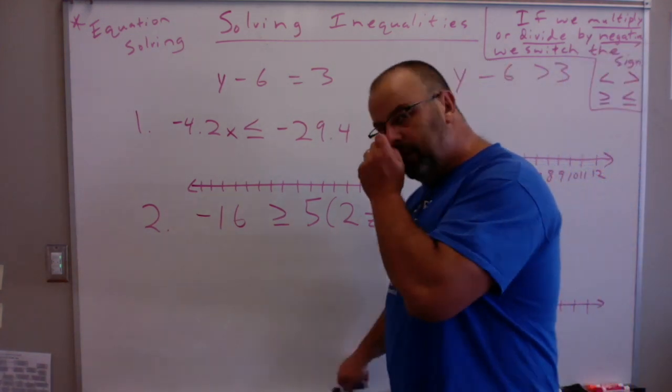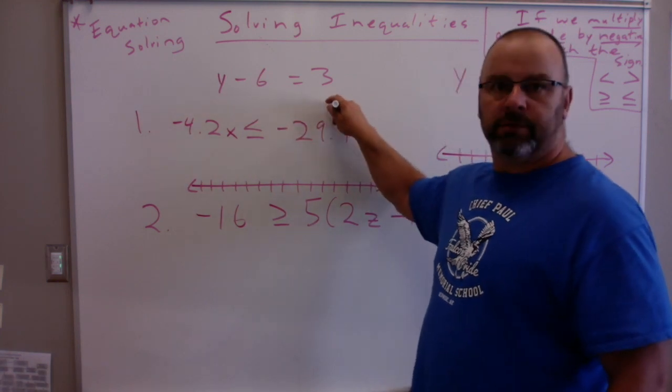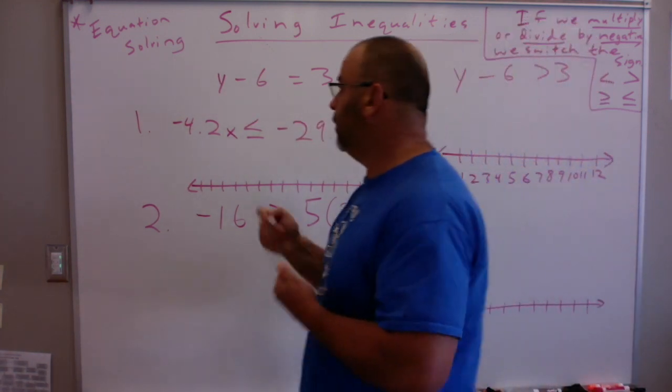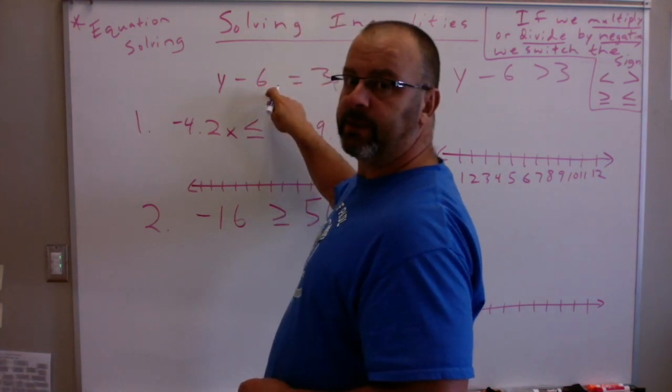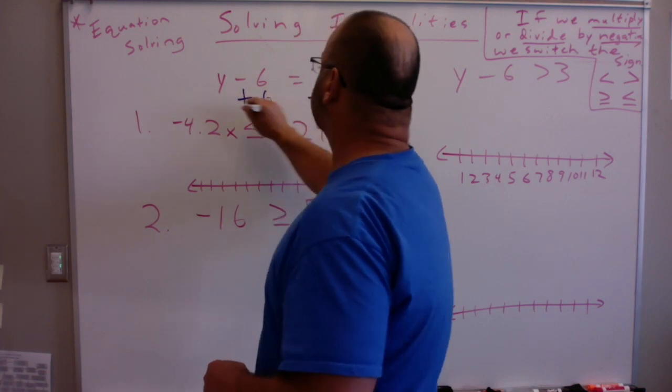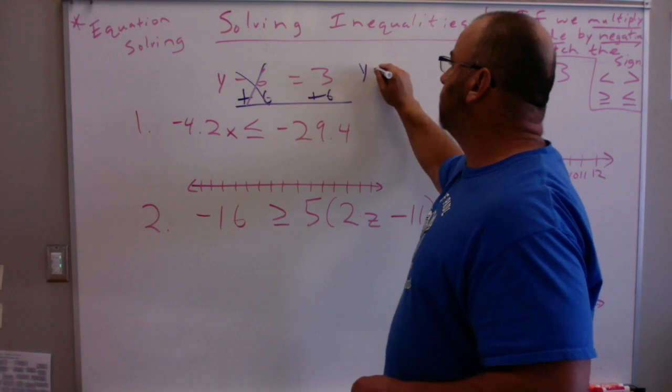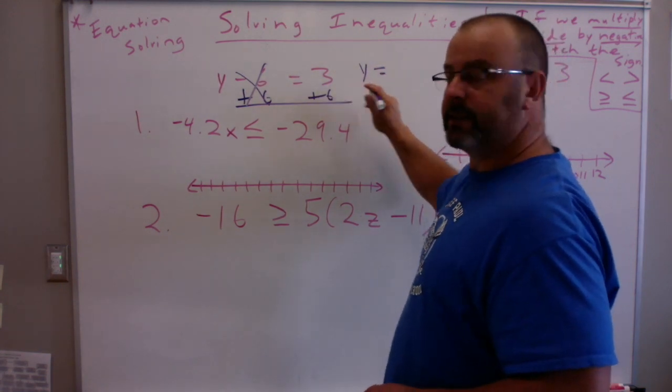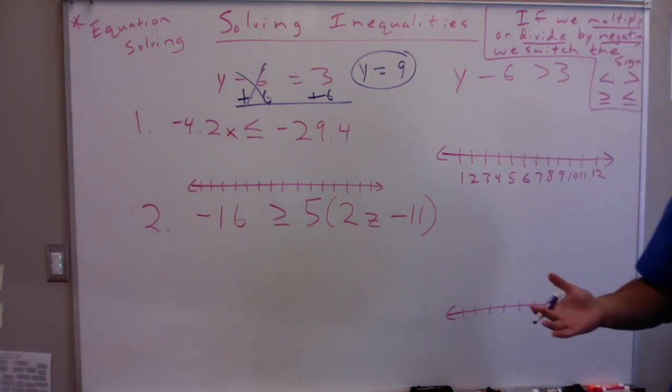So, how would we solve y minus 6 equals 3? We would do the inverse. What are we doing to y? We're subtracting 6. What's the opposite of subtracting 6? Adding 6. So we're going to add 6 to both sides. So when we do that, this goes away. y is equal to 3 plus 6, which is 9. So this would be the solution for just a regular equation.